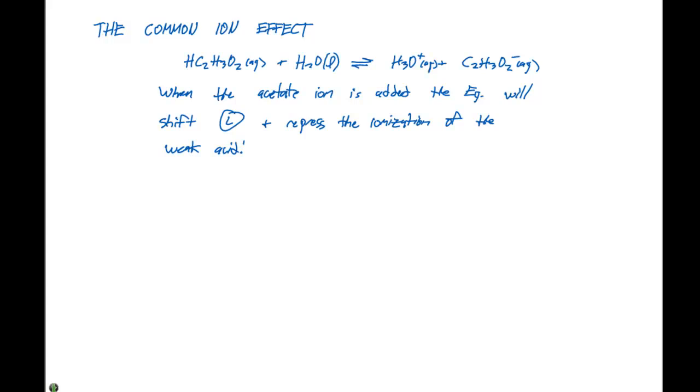This is exactly what Le Chatelier's principle says. If we're adding acetate ion, we're increasing its concentration. When we increase this concentration, the equilibrium shifts to the left and we're not going to ionize as fully. This is known as the common ion effect.